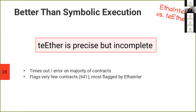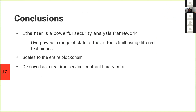We then compared eTainter against Teether, which is a symbolic execution tool. A good thing about Teether is that when it flags a smart contract, it is very likely a true positive, and it also gives a trace indicating how to exploit the contract. But it is incomplete — it flags very few smart contracts out of those already flagged by eTainter, and also times out on many contracts. In conclusion, eTainter is a powerful security analysis tool which outperforms several other tools and scales to the entire blockchain.